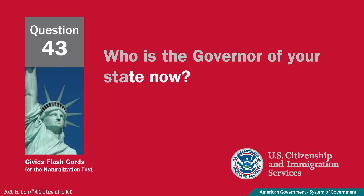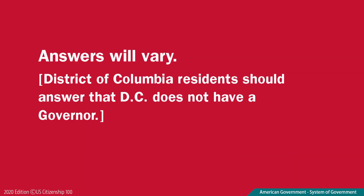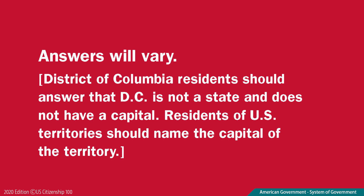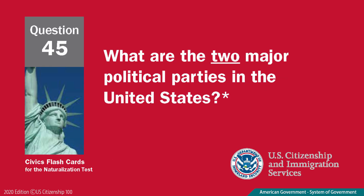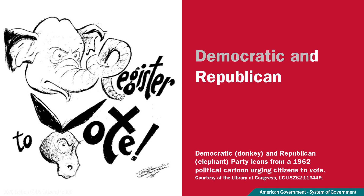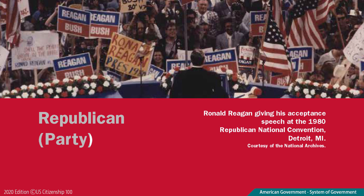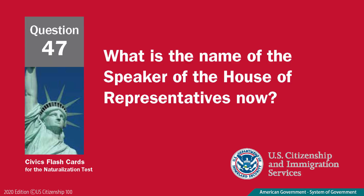Who is the Governor of your state now? Answers will vary. District of Columbia residents should answer that D.C. does not have a Governor. What is the capital of your state? Answers will vary. District of Columbia residents should answer that D.C. is not a state and does not have a capital. Residents of U.S. territories should name the capital of the territory. What are the two major political parties in the United States? Democratic and Republican. What is the political party of the President now? Republican Party. What is the name of the Speaker of the House of Representatives now? Pelosi.